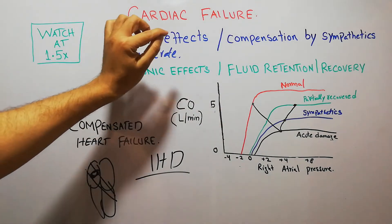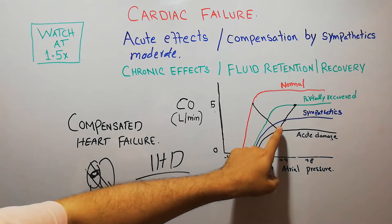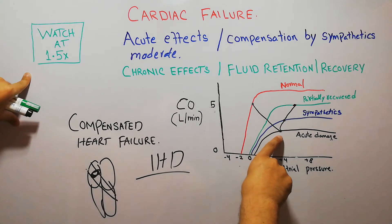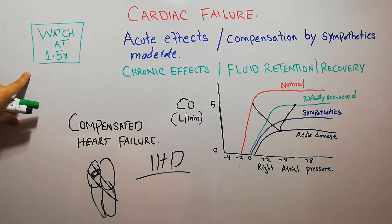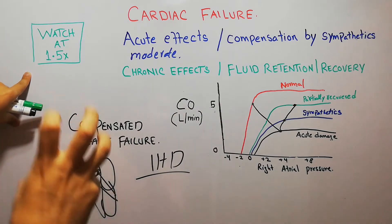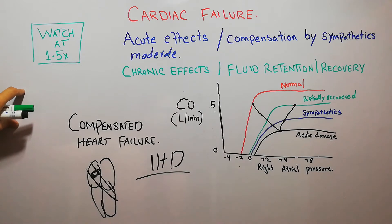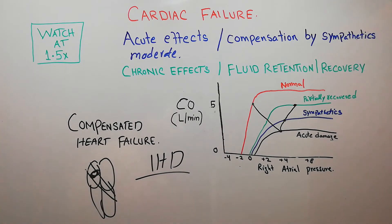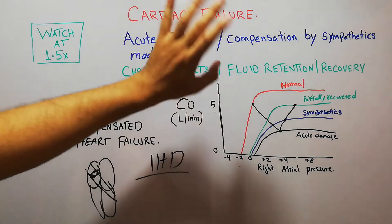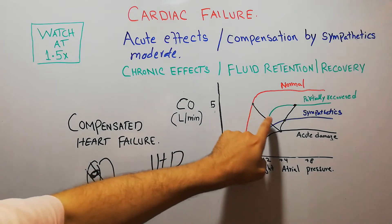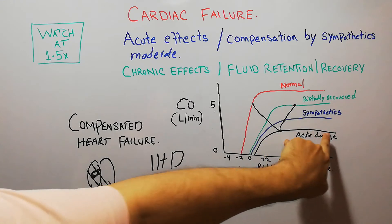When cardiac failure occurs, the acute events lead to decreased blood flow and decreased cardiac output — the amount of blood the heart can pump every minute drops. This is shown by the black curve labeled 'acute damage.' The acute damage curve shows that as soon as damage has occurred, the heart's functions decrease; the heart is unable to pump normally because the muscles are weak and not receiving proper blood through the vessels.